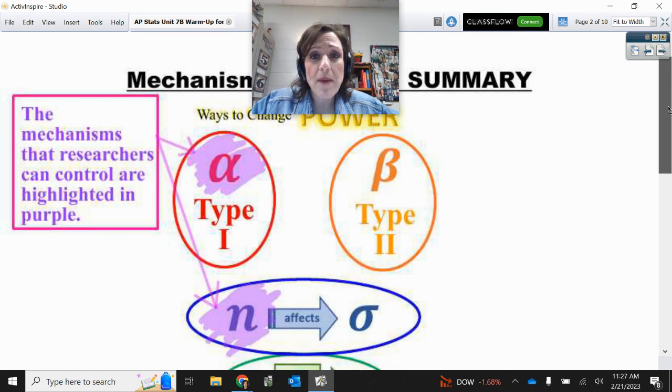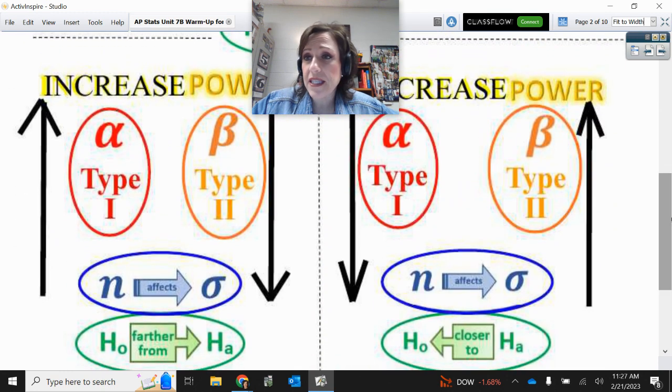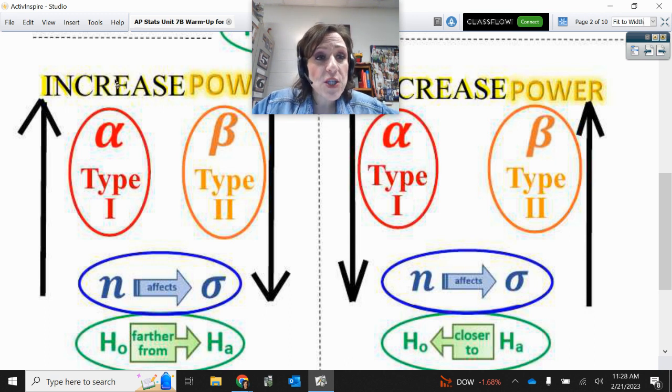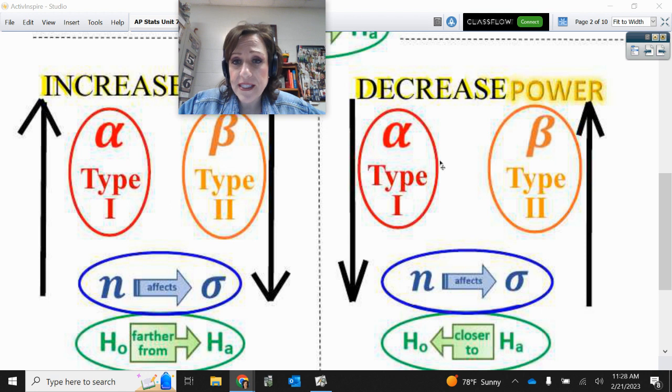So remember our mechanisms of change and how these things are affected. Increasing power: you might want to remember how to draw these. You got your alpha Type I, beta Type II, n affects standard deviation, and H0-HA is farther away, bigger distance. These are ways to increase power. So if sample size goes up or if alpha goes up, you are increasing power. Decreasing power is this one, so the arrow on the left is down. If alpha goes down or your sample size goes down, you're decreasing power. Also, HA is closer to H0, so you don't have incredibly crazy data. It's harder to detect that there is an effect if there really is one because the data is fairly close to the H0.